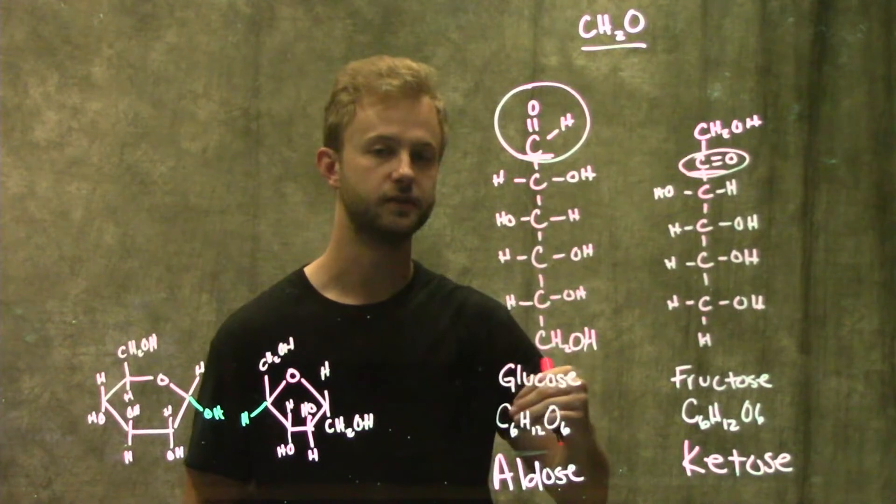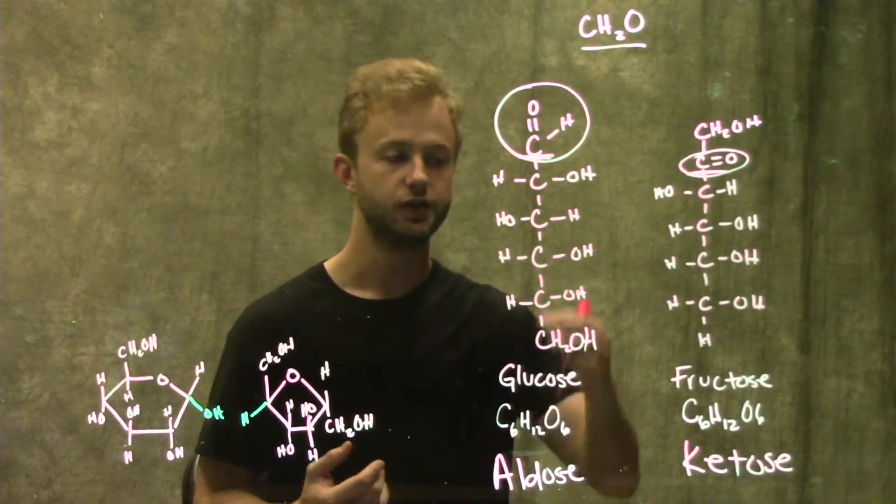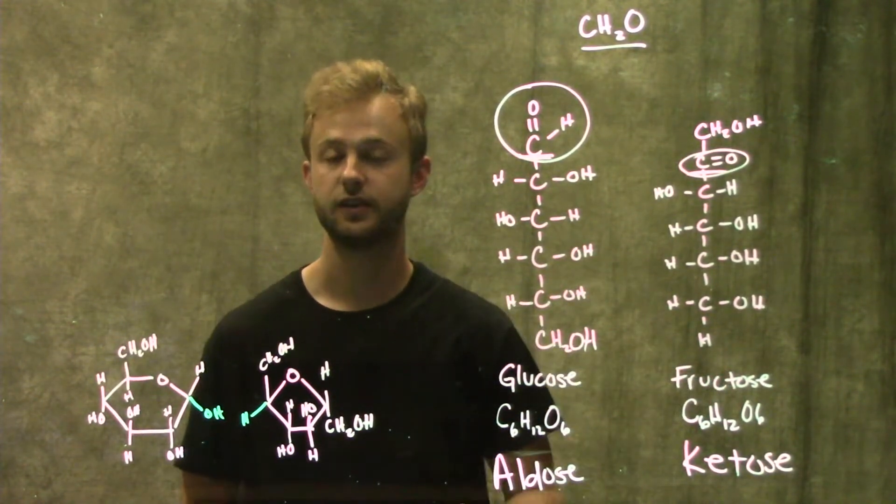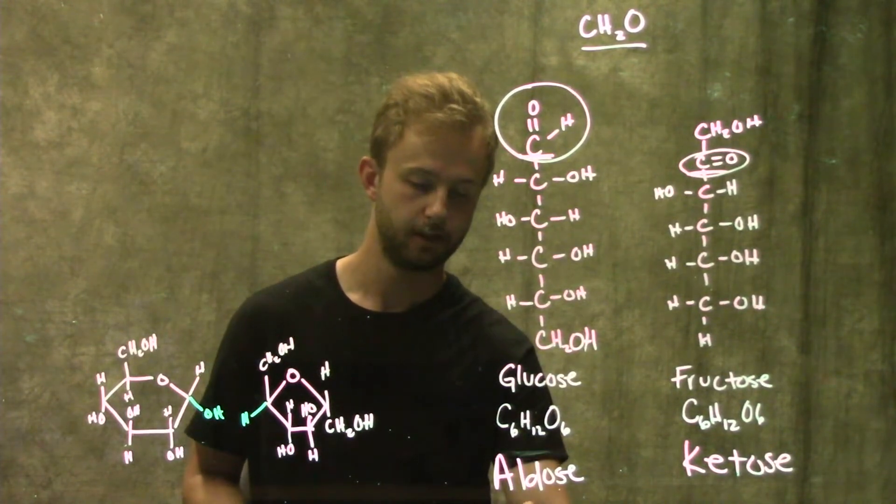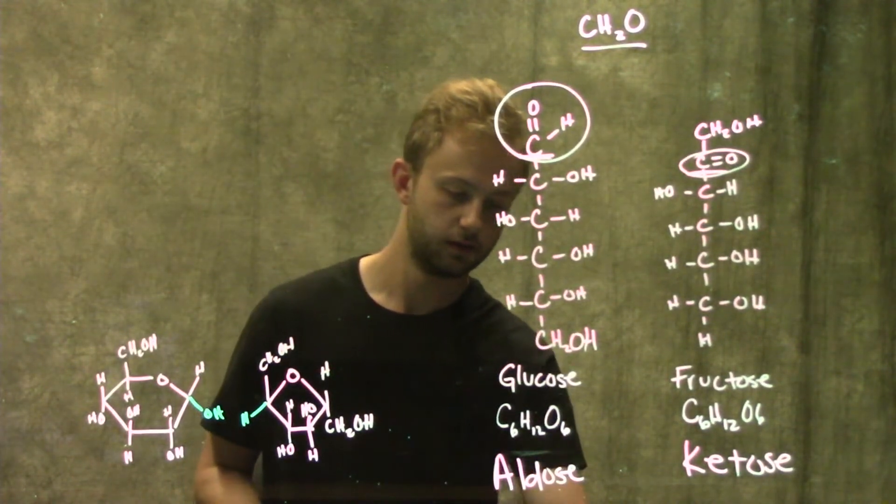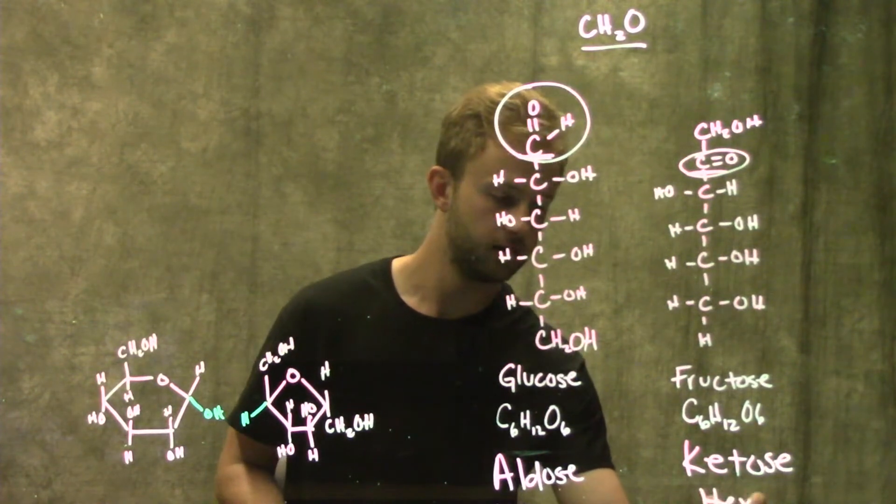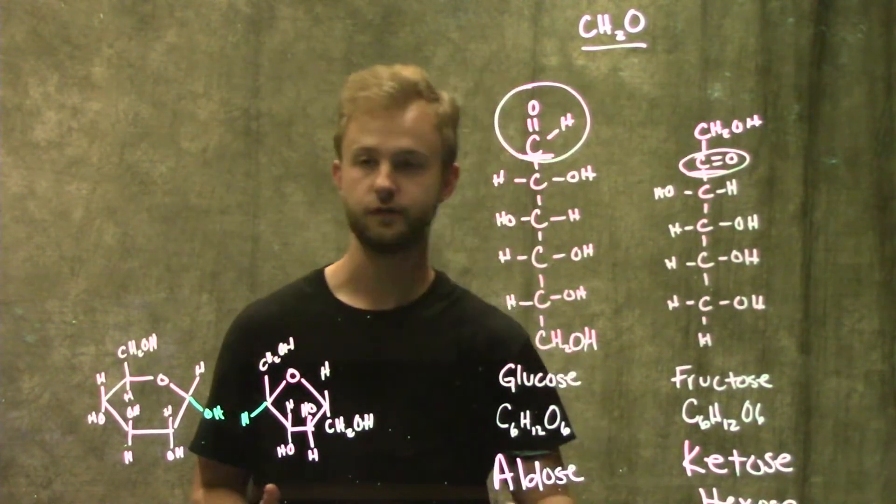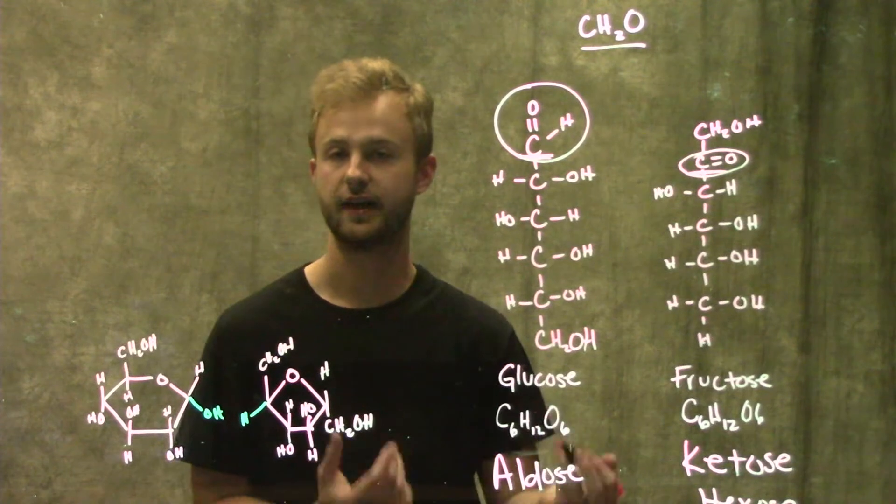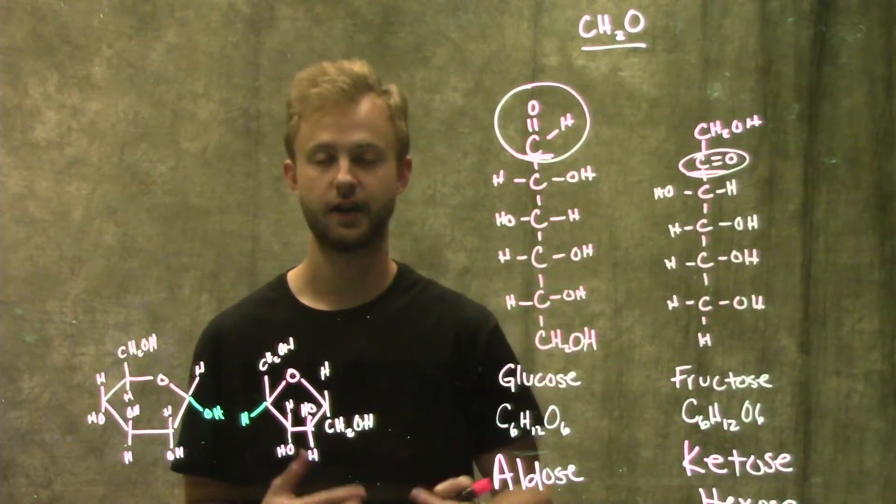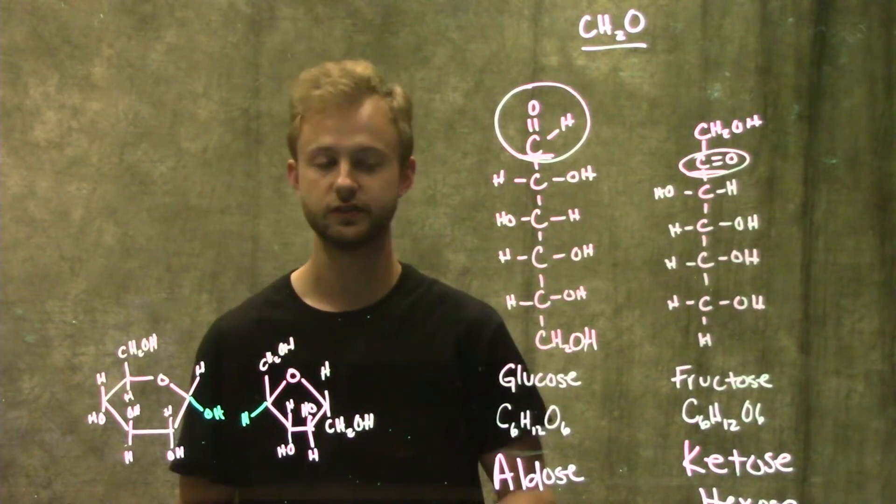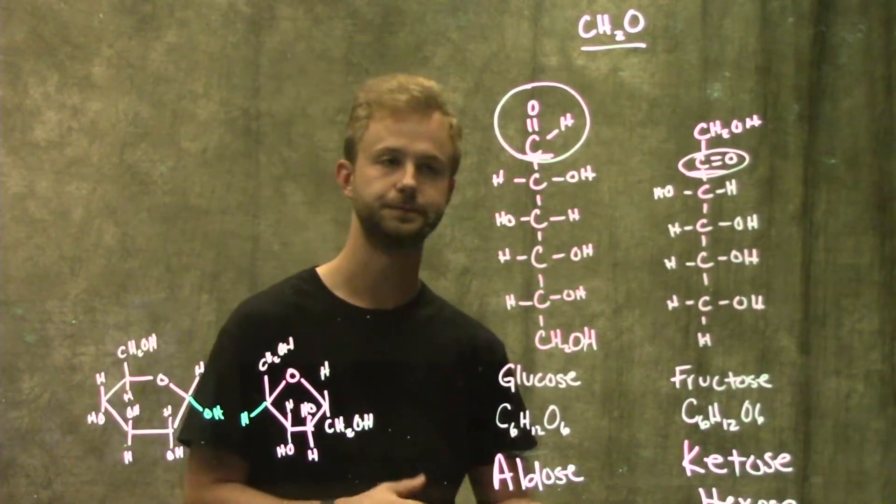Next we'll look at the number of carbons in these molecules. Both of these molecules are going to have six carbons, which makes them a hexose. You get that by doing the prefix for whatever number it is, and then you just add -ose to the end. So if these had five carbons, they would be pentoses. If they had three carbons, they would be trioses, and so on.